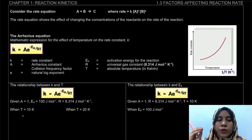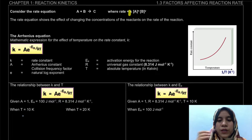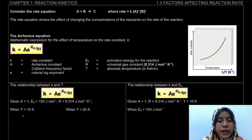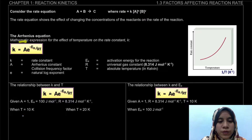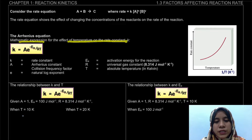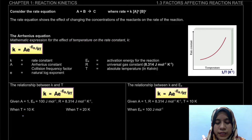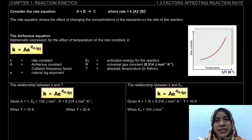Now what we're going to look at is the factors affecting the rate constant K. The Arrhenius equation is the mathematical expression for the effect of temperature on the rate constant. We can also see the effect of activation energy as well.